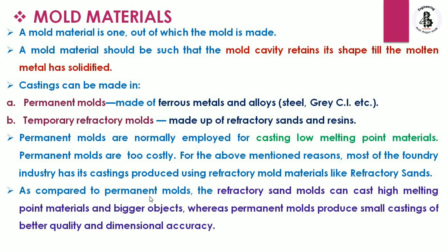As compared to permanent molds, refractory sand molds can be used to cast high melting point materials as well as bigger size objects. Permanent molds produce small size castings with better quality and good dimensional accuracy. For mass production of small size jobs, permanent molds made with steel or gray cast iron are most preferable. For large size cast jobs, temporary refractory molds are most suitable.